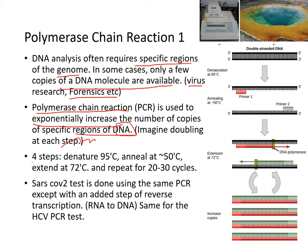There are four steps. One: denature at 95 degrees. Two: anneal at 50 degrees — you have to anneal the primer. Remember in DNA replication, the cell uses an RNA primer, but here we use a DNA primer. Three: extend at 72 degrees — this is the replication step. And four: repeat these three steps for 20 to 30 cycles.